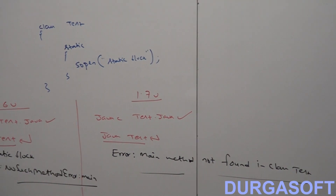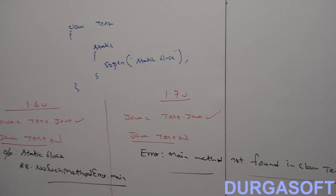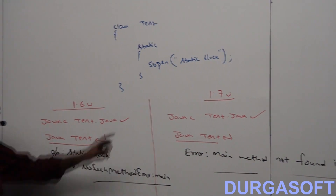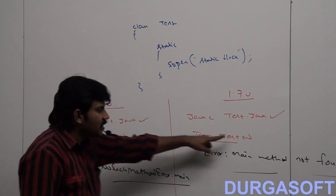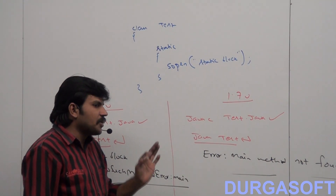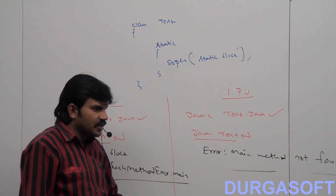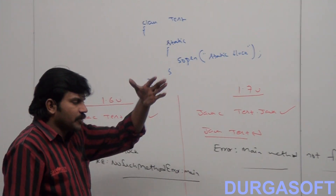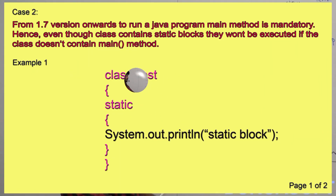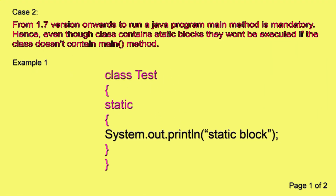Are you able to understand? So from 1.7 version onwards, to run a Java program, the main method is compulsory and mandatory.